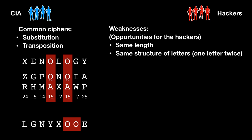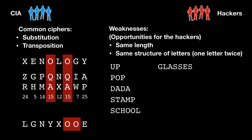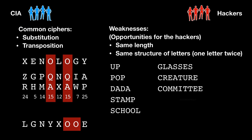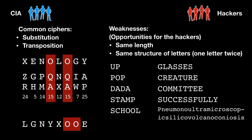Every word will have a different length. We can start with 'up', and it is also useful to use words with repeating letters — so 'pop', 'data', 'stamp', 'school', 'glasses', and so on. We can finish the list with a really long word and hope that the spy will not choose that one.